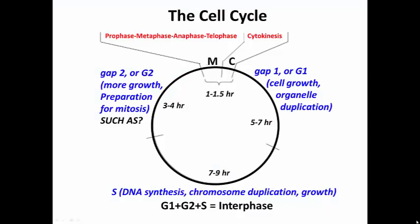These are the phases of the cell cycle as we know them now. I've included prophase, metaphase, anaphase, and telophase, and then cytokinesis as part of the M phase shown here. Here is how much time each phase lasts — and it's variable depending on the cell cycle.